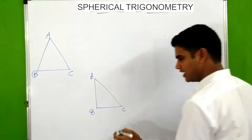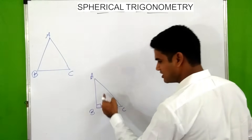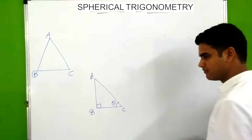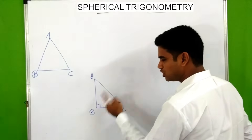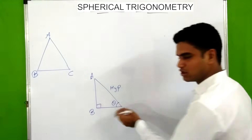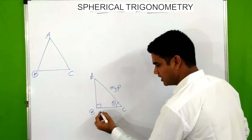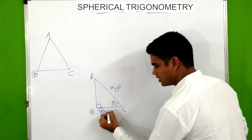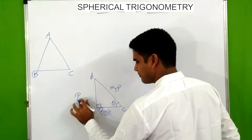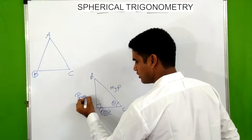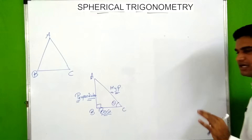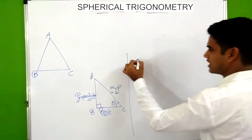For trigonometry we will assume any one side or any one angle as theta. Assuming this angle as theta, the side opposite to the 90 degree angle is known as hypotenuse. The side adjacent to the assumed angle theta is known as base, and the side opposite to the assumed angle theta is known as perpendicular.